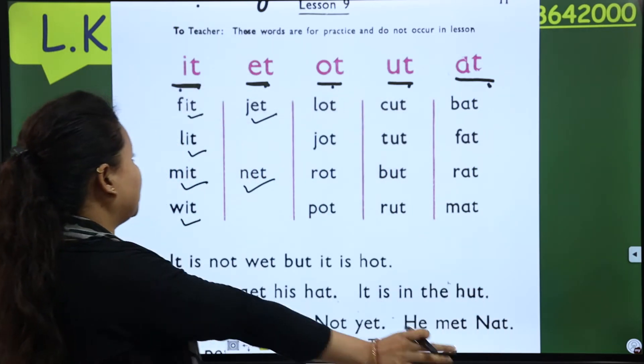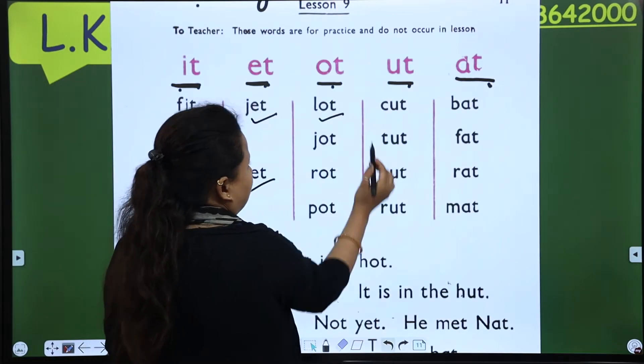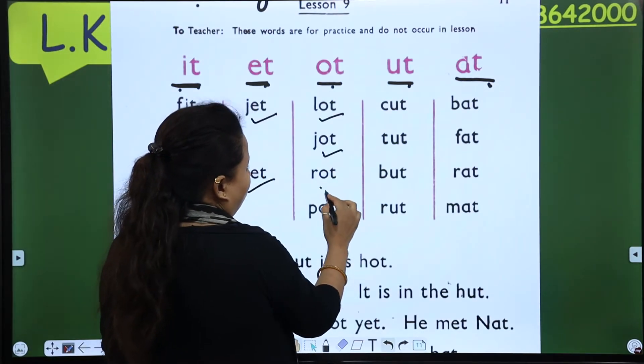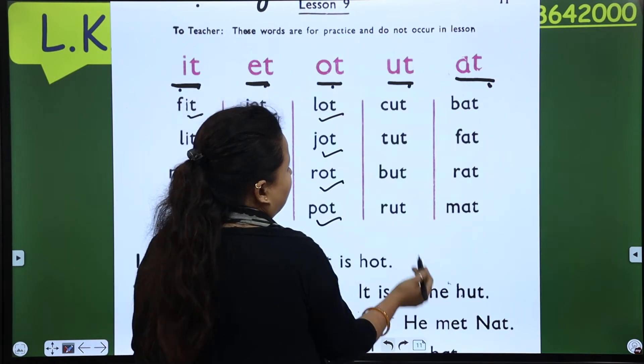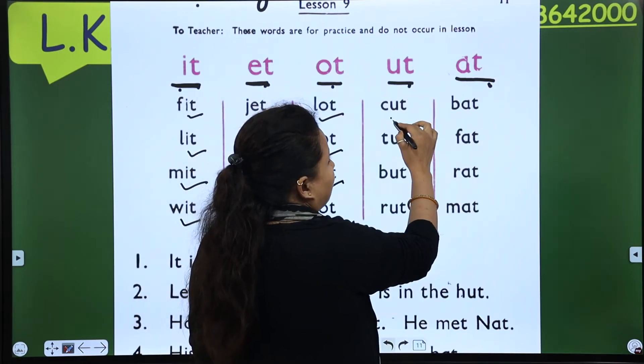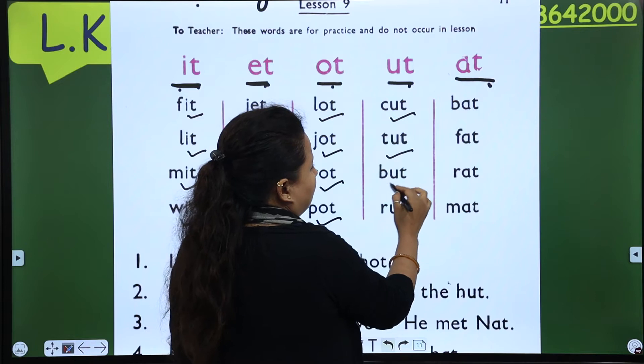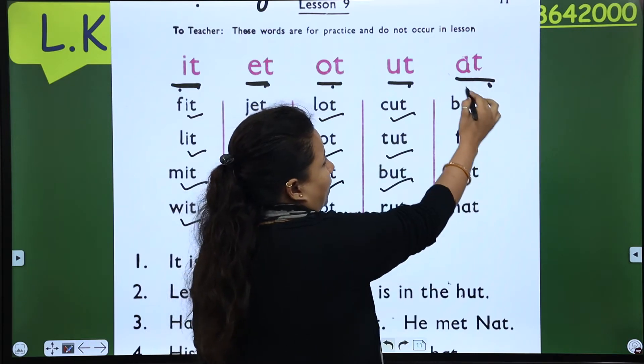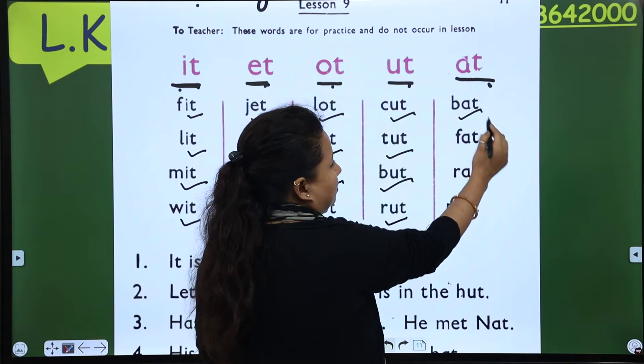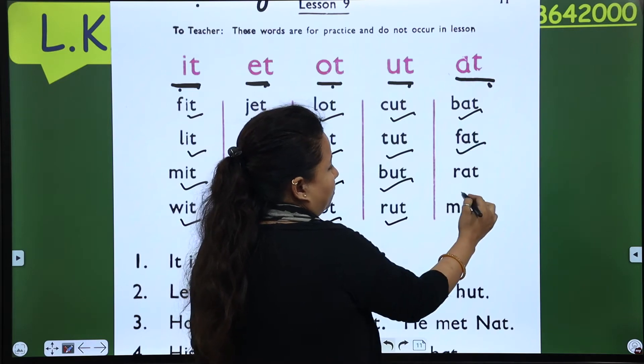So next is ot: lot, jot, rot, pot. At, cut, tut, but, and rut. At, bat, fat, rat, and met.